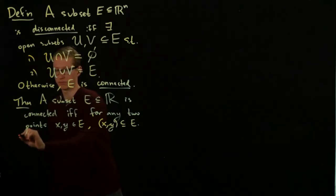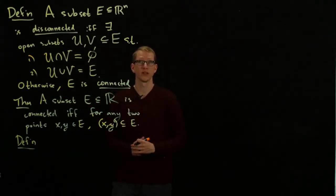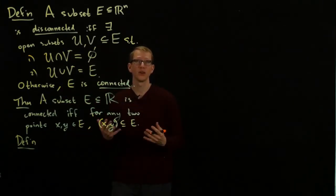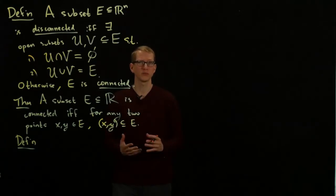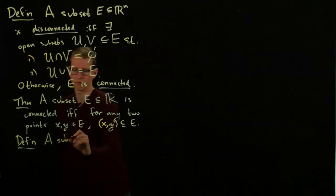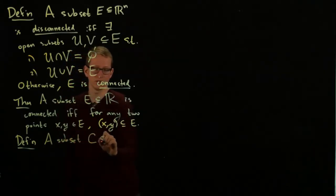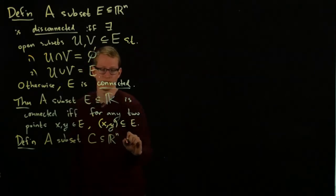However, in higher dimensions, we can use this criteria for another potential definition. Instead of calling it connected, we're going to use the definition convex, because we'll see there's a slight difference. A subset C in R^n is convex